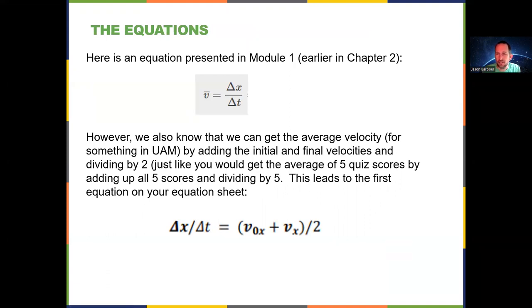Here's something that we presented in an earlier video, the definition of average velocity, which is displacement over time. If we also think about that average velocity, if we had two velocities and we wanted to find the average of them, we could add them together and divide by two. And so that's what we have here. That's the average of the initial velocity in the x direction and the final velocity in the x direction.